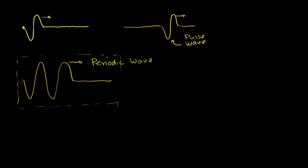The motion is repeated over and over again. So what I want to talk about is some of the properties of a periodic wave. Now the first thing you might ask is, how far are you jerking it up and down? How far are these movements from rest? If this is the resting position, how far are these movements up above and below the resting position? We call that the amplitude of the wave. That distance right there — I'll do it in magenta — is the amplitude.